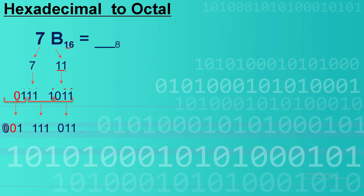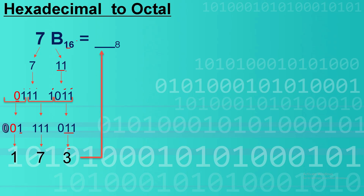Then we convert these groups to decimal values. The equivalent of the first group is 1. The equivalent of 111 is 7. And the equivalent of the last group is 3 — so 2 plus 1. Therefore, our answer for 7B hexadecimal to octal is 173.